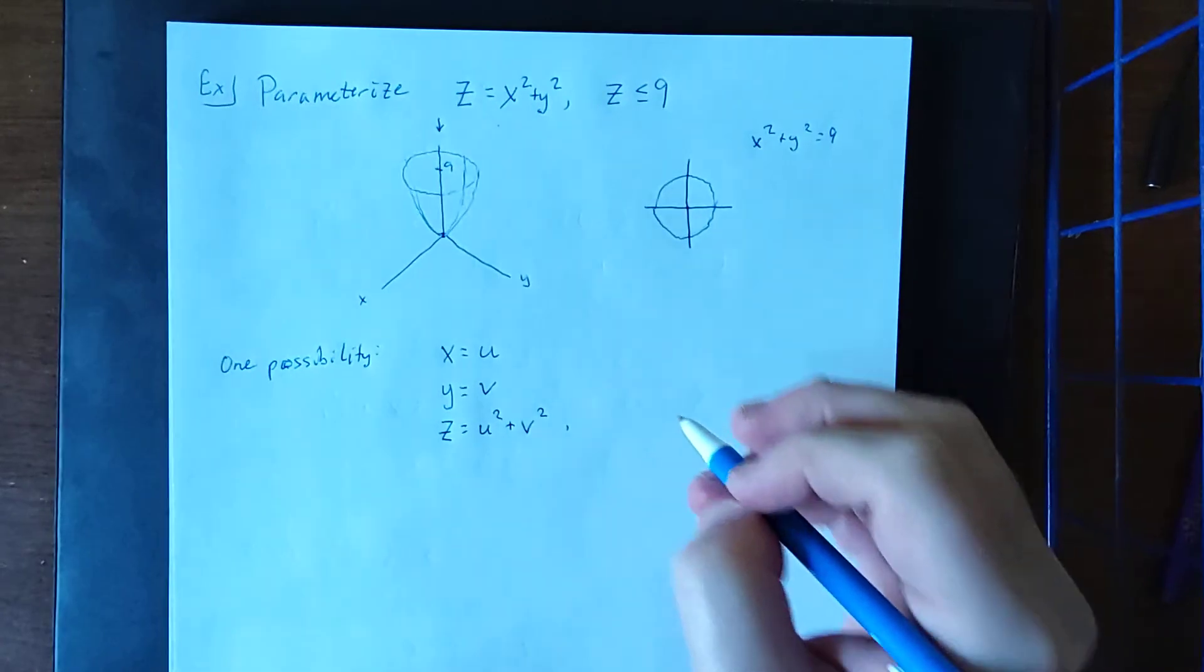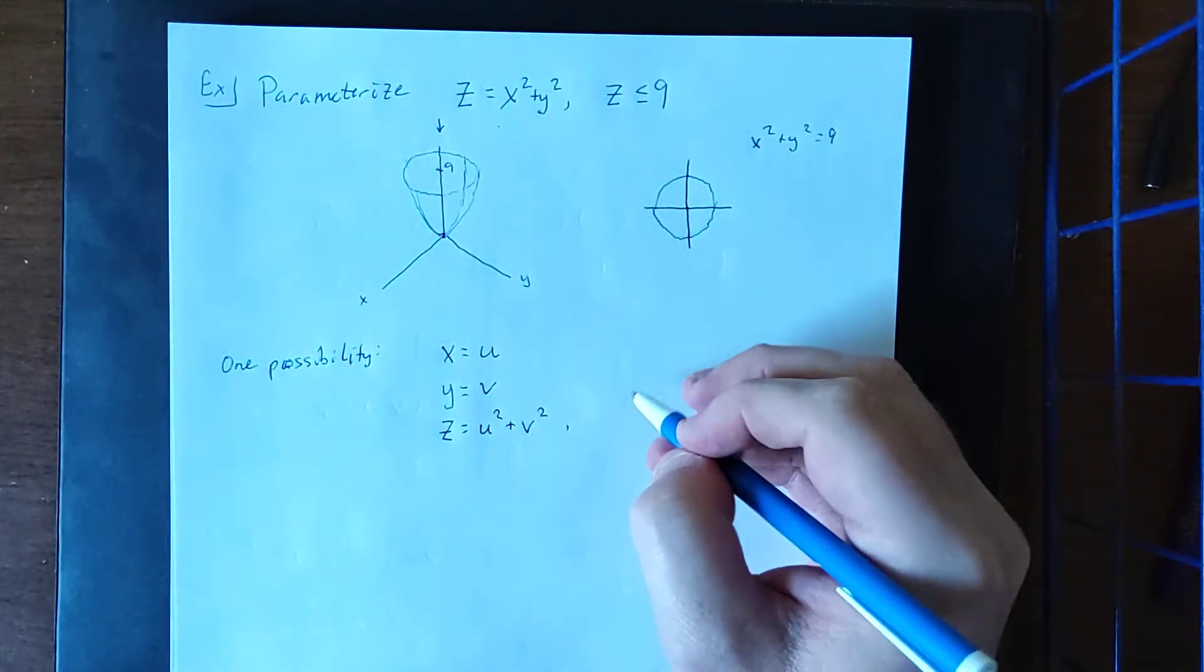Now the associated region would be that u squared plus v squared